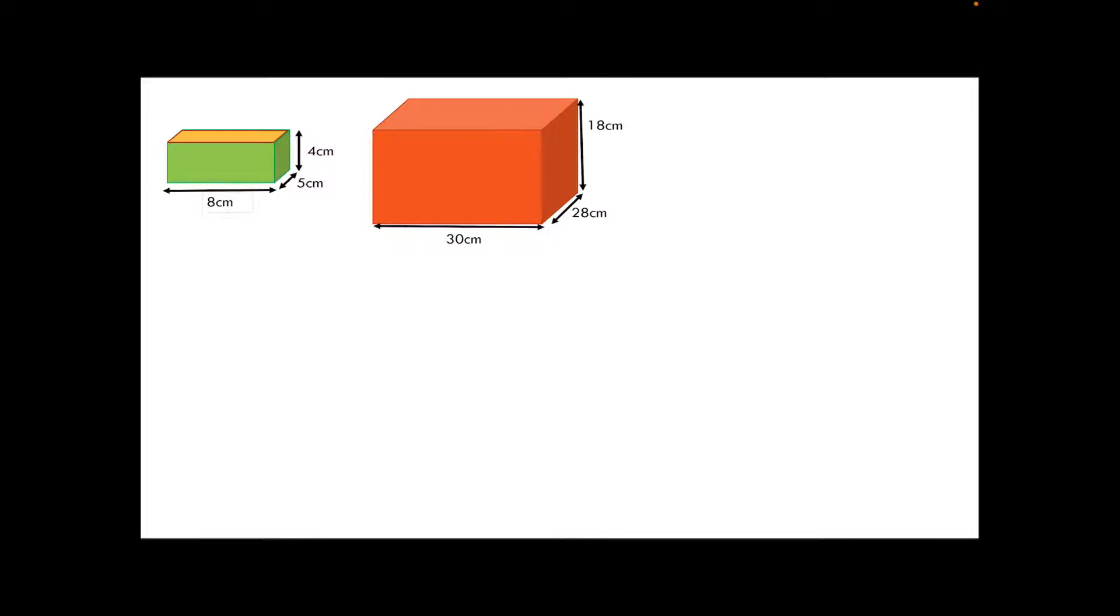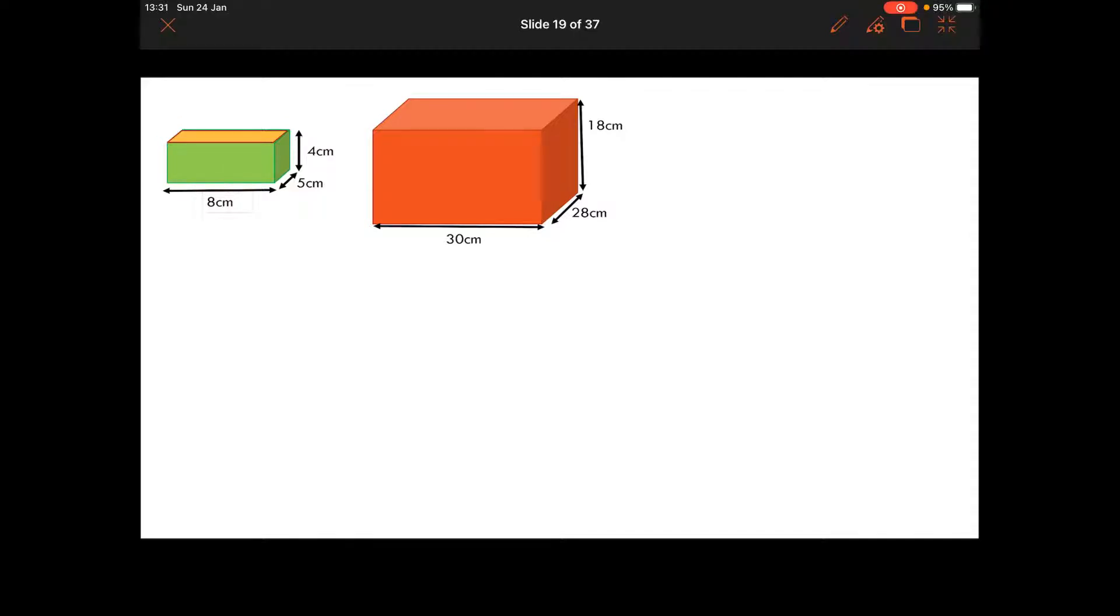What I would do is I would lay out as a table. So I'm going to take my length, my breadth, and my height, and I'm just going to write them out as my table headings. So we've got 30, 28, and 18. And then I'm also going to have total at the end, and you'll see why as we go through this example. So I'm just going to set my table up. The first thing I'm going to do then is have my length, my breadth, and my height just match exactly how it is in the diagram. So 8, 5, and 4.